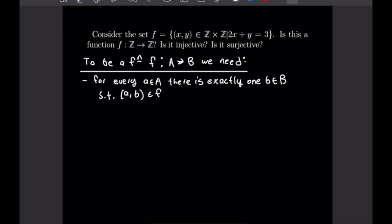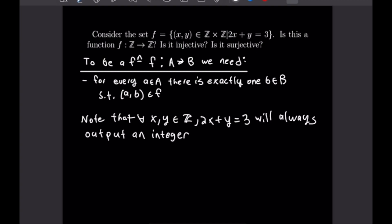In order to be a function, which we'll denote as f from A to B, we need for every a in A, there's exactly one b in B, such that the ordered pair (a, b) is in f. So in order to demonstrate this, let's note that for all x and y which are integers, 2x plus y equals 3 is always going to output an integer. No matter what we plug in for x and y, we will always get an integer, which is all we need to demonstrate that f is a function. Thus, f is a function — specifically, it is a function from Z to Z.